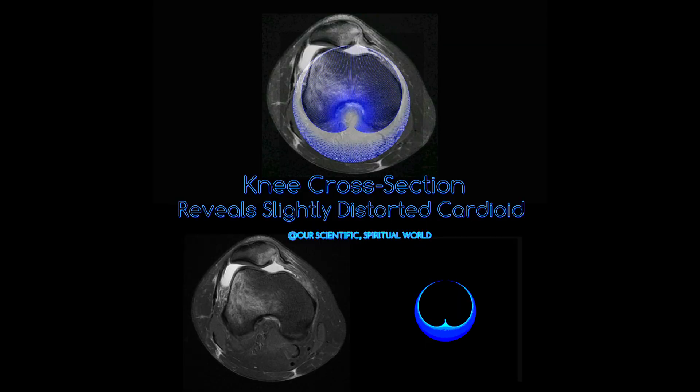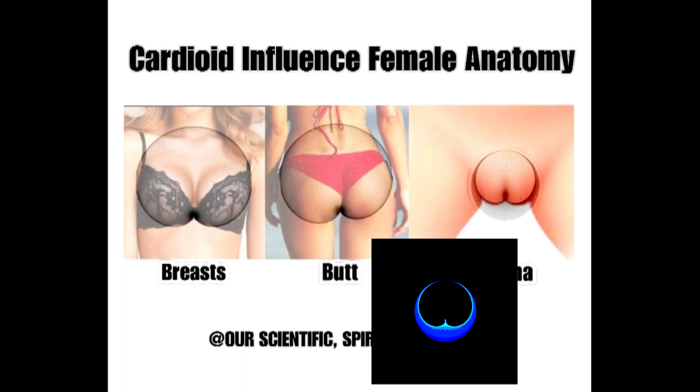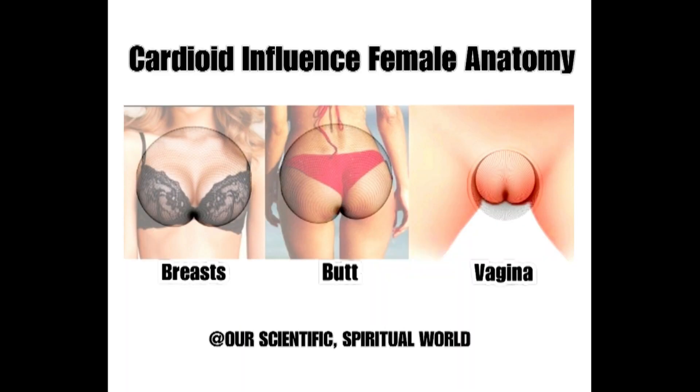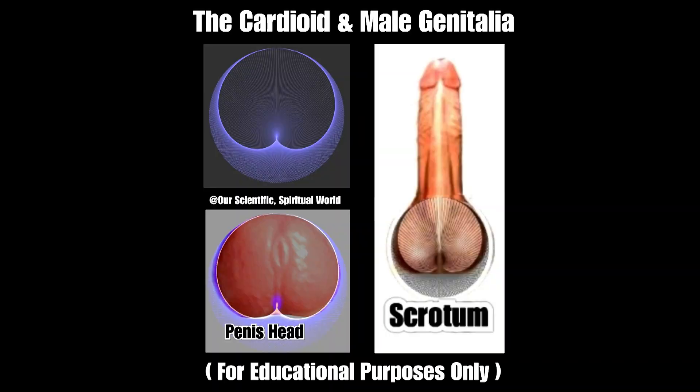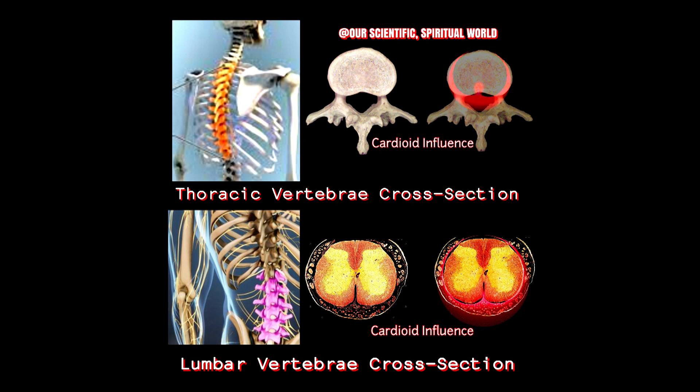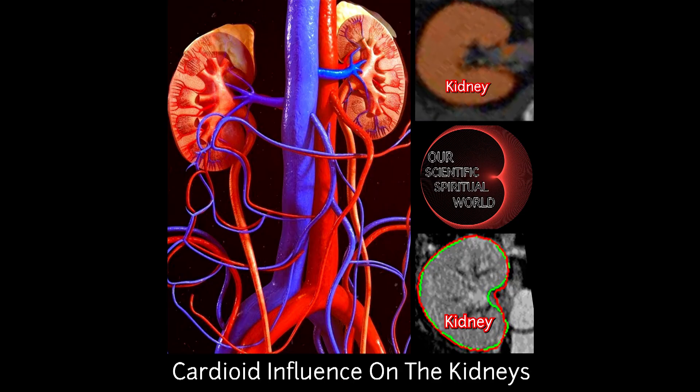Here we see it as a distortion in the kneecap. We can see it throughout the female genitalia, as well as the male. Just like the brain stem, you can see it stemming through the vertebrae of the spine, as well as the kidneys.